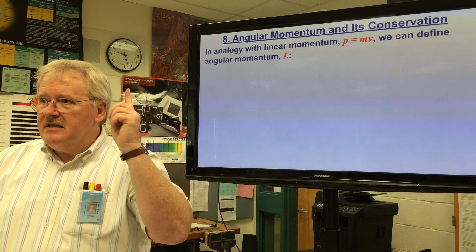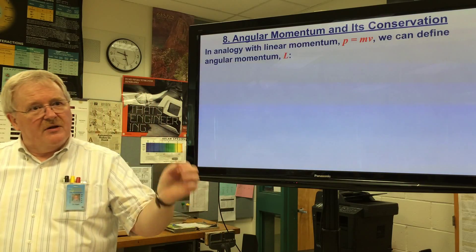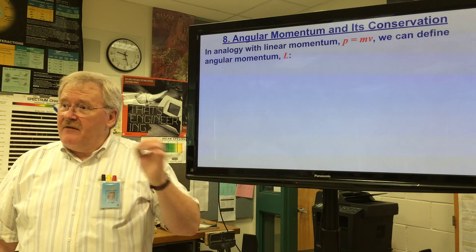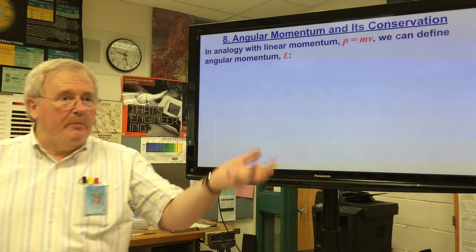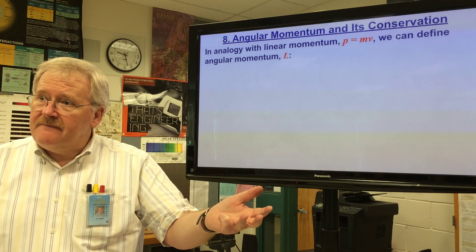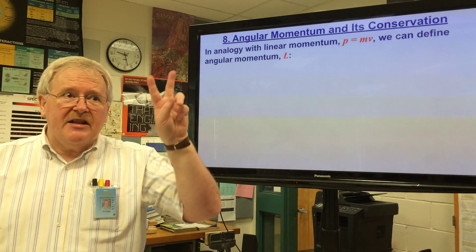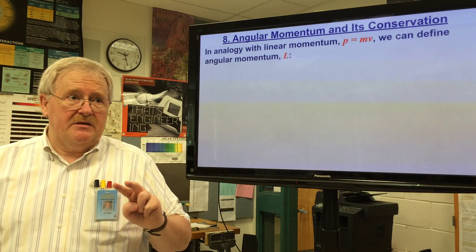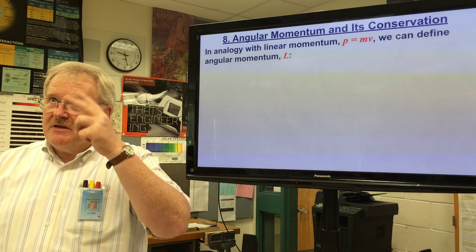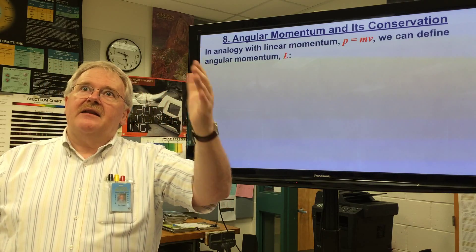We can think of again a similar thing with electrons. We could imagine the concept of them spinning on their own axis or we could think of them as orbiting the nucleus and having an angular momentum due to that orbiting.